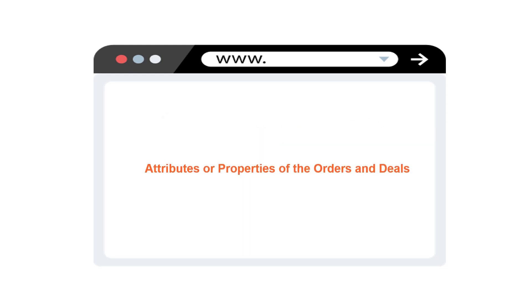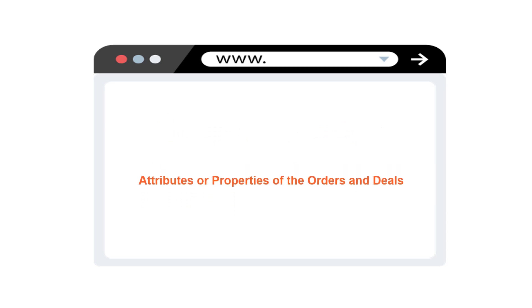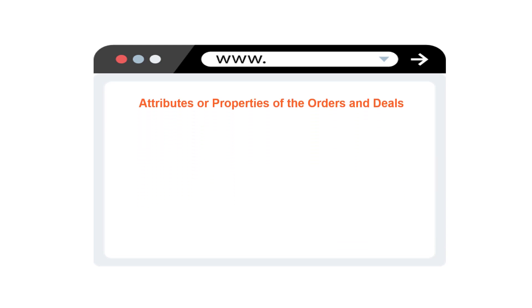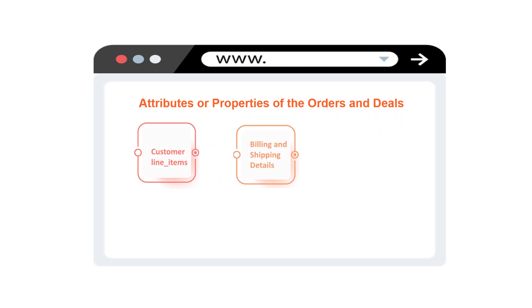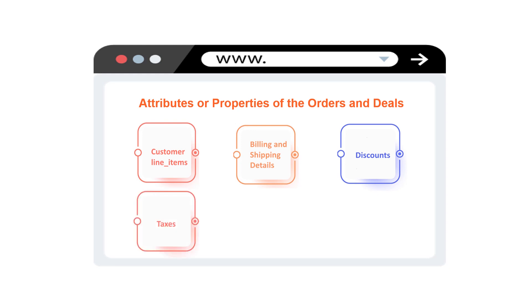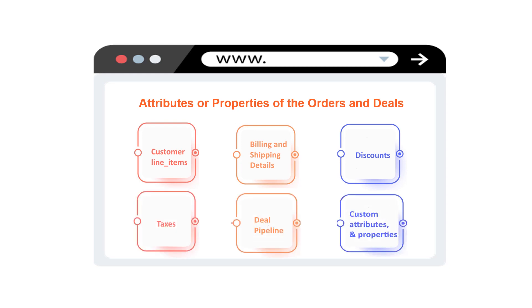Now, you will be required to select the attributes or properties of the order and deal which you want to flow between the platforms, like customer line items, billing and shipping details, discounts, taxes, deal pipeline, custom attributes, and properties.